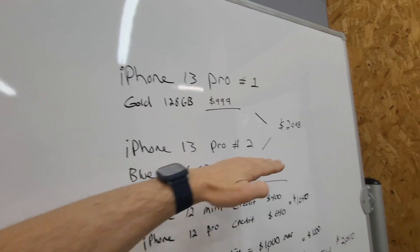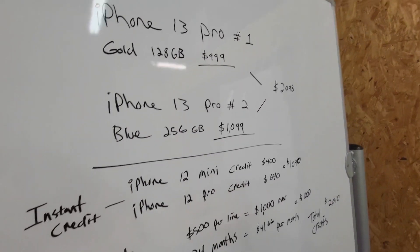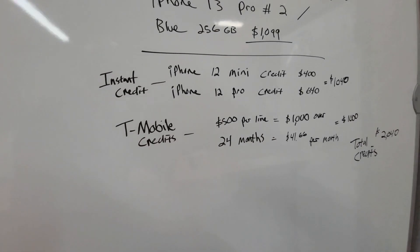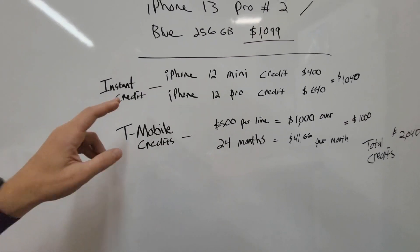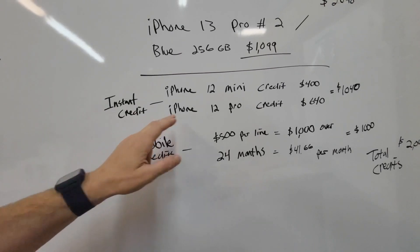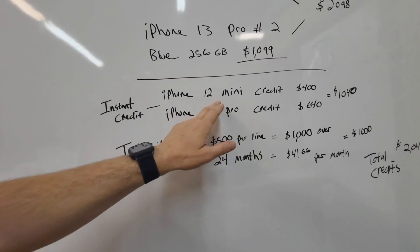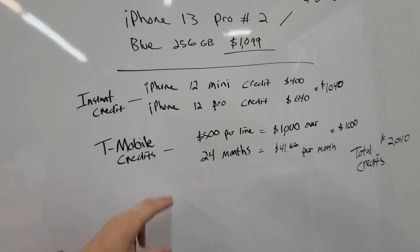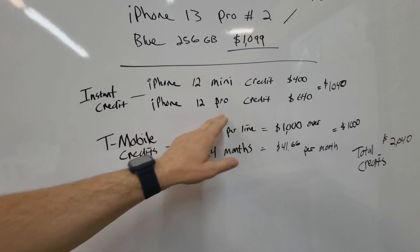Then down here are the credits we are eligible for. Instant credit for my phone, which is the iPhone 12 mini, gets me $400. Her phone, which is the iPhone 12 Pro, gets her $640. So we have a credit amount here of $1,040.